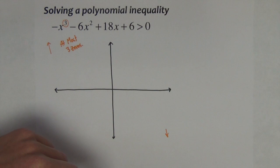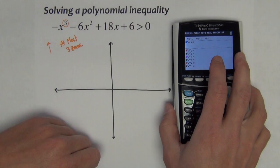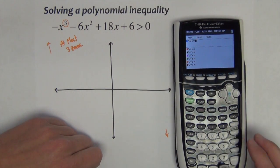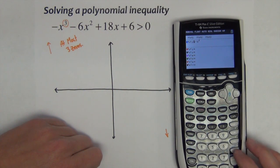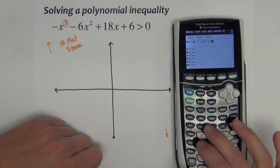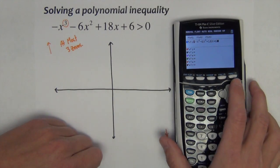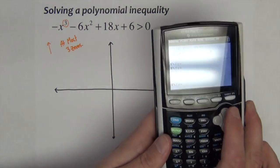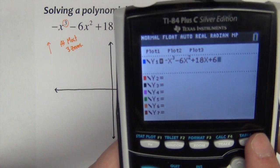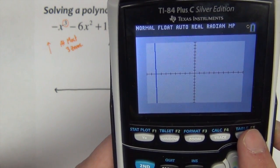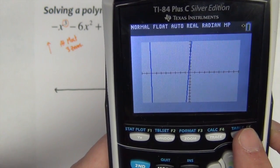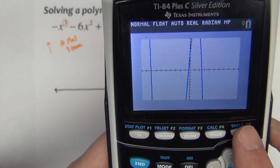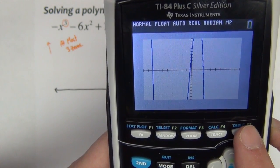Let's go ahead and use the graphing calculator to help us see a graph of this function. If you get yours out, you can follow along and do the same thing I'm doing. -x³ - 6x² + 18x + 6. I'll bring it up a little closer so we can see better. There it is typed in. If I graph it...